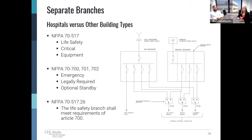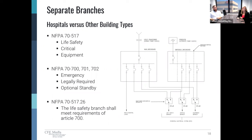The legally required branch provides power to aid in firefighting, rescue operations, control of health hazards, and similar code or AHJ-mandated operations. The optional standby branch provides power for systems not required by code, but whose failure can cause physical discomfort, interruption of an industrial process, damage to process equipment, or disruption of business. There can be contradictions between Article 700 and 517, but Article 517.26 specifically says that the life safety branch shall meet the requirements of Article 700 except as amended by Article 517 — meaning Article 517 will always govern when there are discrepancies.